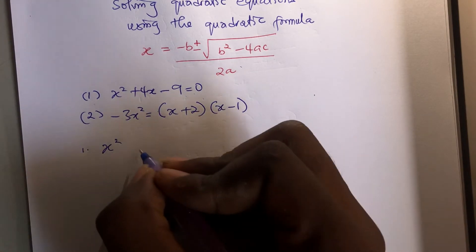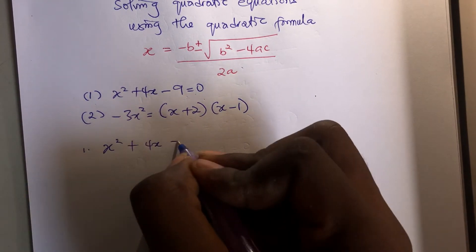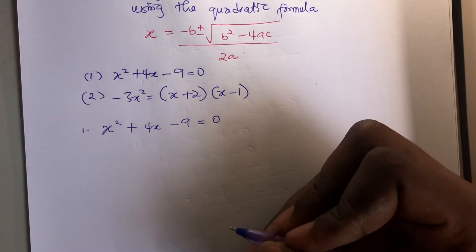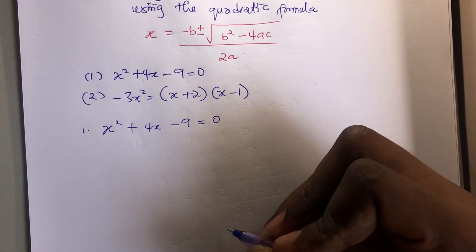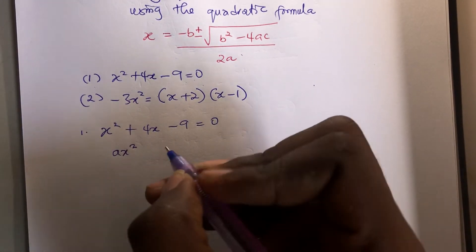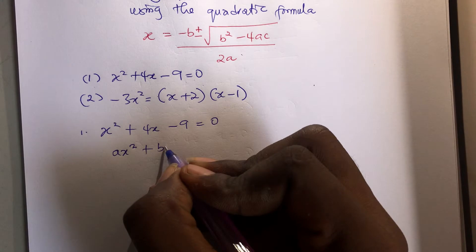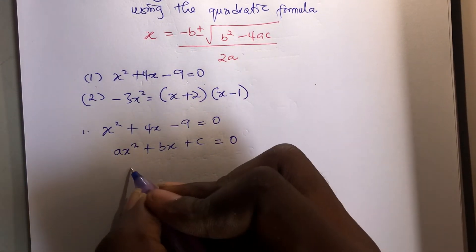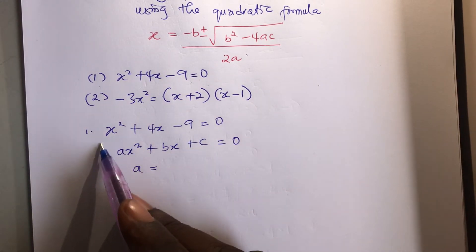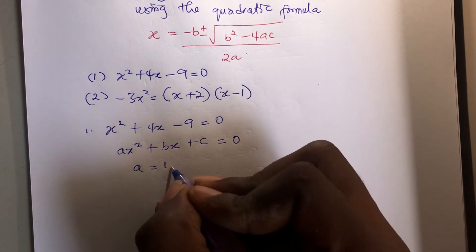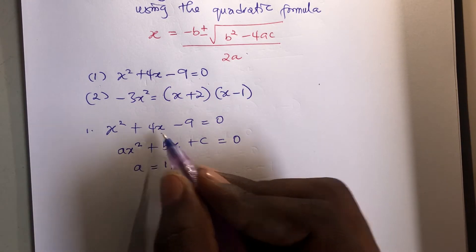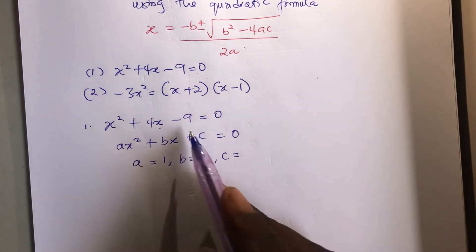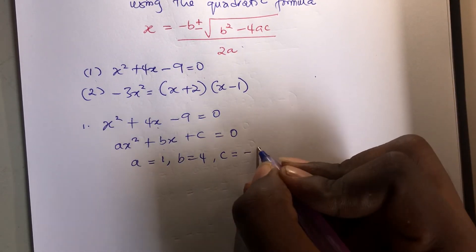So x squared plus 4x minus 9 is equal to 0. The general form of the quadratic equation is given as ax squared plus bx plus c equals to 0. A in this case is the coefficient of x squared which is 1, b is the coefficient of x which is 4, while c is the constant which in this case is minus 9.